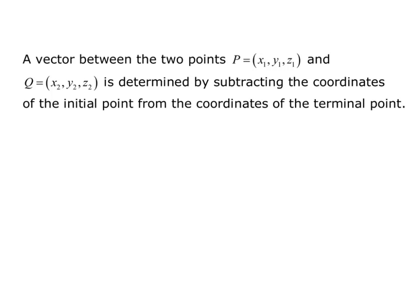A vector between two points, P being the point (x1, y1, z1) and Q being the point (x2, y2, z2), is determined by subtracting the coordinates of the initial point from the coordinates of the terminal point. This gives us vector PQ equals angle bracket x2 minus x1, y2 minus y1, z2 minus z1.